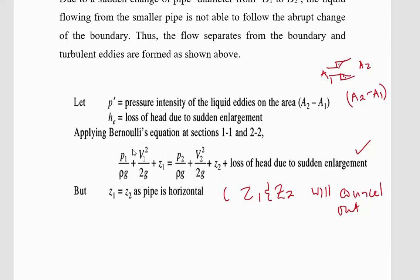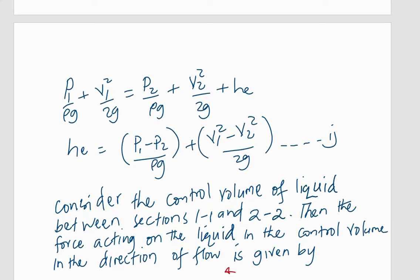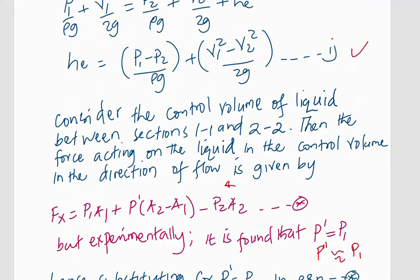If we apply Bernoulli's principle: P1/(ρg) + V1²/(2g) + Z1 = P2/(ρg) + V2²/(2g) + Z2 + HE. Let this be our first equation. Now let's consider the control volume of the liquid between sections 1-1 and 2-2.